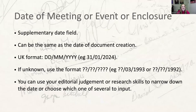The next date is the date of meeting, event or enclosure — a supplementary date field we use to record important dates that aren't necessarily the date on which the document was created. For an important meeting between two heads of state, the first briefing document might be written months in advance but would still be useful for someone researching the meeting. You can also use it to record the date of an enclosure or another important point of reference. You can repeat the date of document creation here where they coincide, so that someone searching documents relating to a particular meeting only has to search one field.